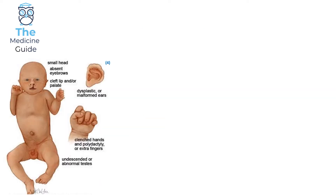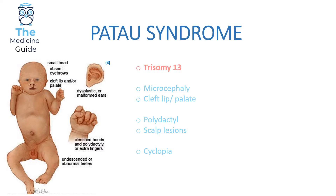This is an example of Patau syndrome. Patau syndrome is caused by trisomy 13, and it's really important that you remember the underlying pathology — trisomy 13 — as that comes up classically in exams. The child will present with microcephaly and a cleft lip or cleft palate. Cleft lip involves just the upper lip, whereas cleft palate involves the inner mouth, and when you look into the child's mouth you'll see that slit-like structure.